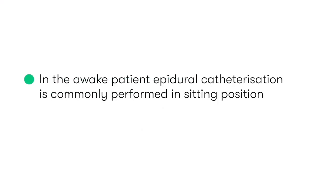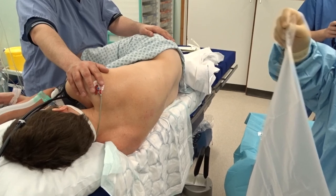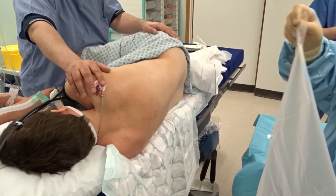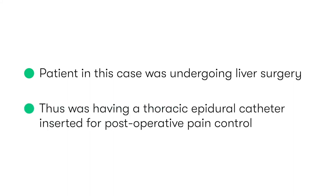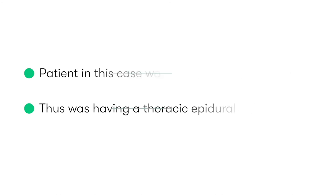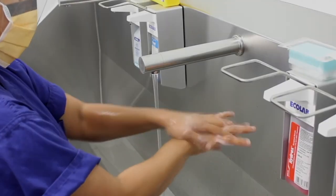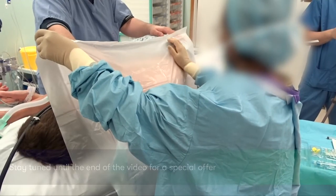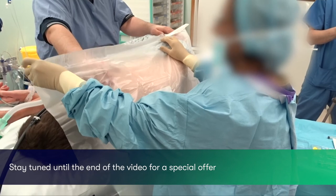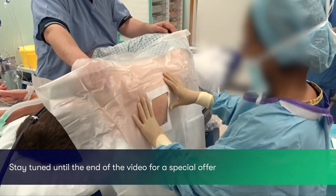In the awake patient, epidural catheterization is commonly performed with the patient in a sitting position. However, in the patient under general anesthetic, as is the case here, the lateral decubitus position is typically adopted. The patient in this case was undergoing liver surgery and thus was having a thoracic epidural catheter inserted for post-operative pain control. Having put on our surgical mask and cap, washed our hands, and put on our sterile gown and gloves, we clean the insertion site with antiseptic solution. We then place a sterile drape with a hole in the middle over the catheter insertion site, located at the lower thoracic vertebral column.